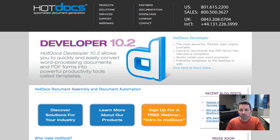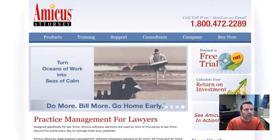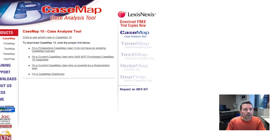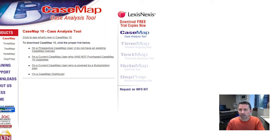Another similar product is Amicus Assembly, which integrates with Amicus Attorney. And lastly, there's case management software. Case Map, for example, makes it easy to organize and explore all the facts in a case, the cast of characters, and all of the issues in a case.